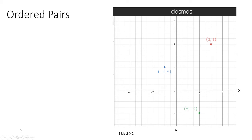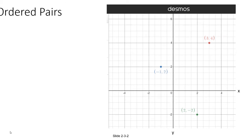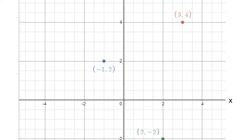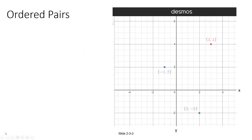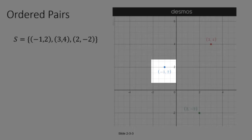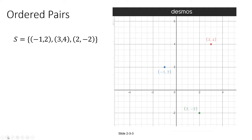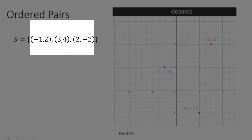A lot of you may be familiar with the idea of ordered pairs from algebra. In algebra, you may have plotted ordered pairs in the x-y coordinate system. But even if you're not familiar with ordered pairs from algebra, we're looking at them a little bit differently — we're going to be thinking of them in terms of sets. So for example, here in my diagram, I have three ordered pairs: the ordered pair negative 1, 2; the ordered pair 3, 4; and the ordered pair 2, negative 2. Each one of the pairs of numbers in parentheses are called ordered pairs.